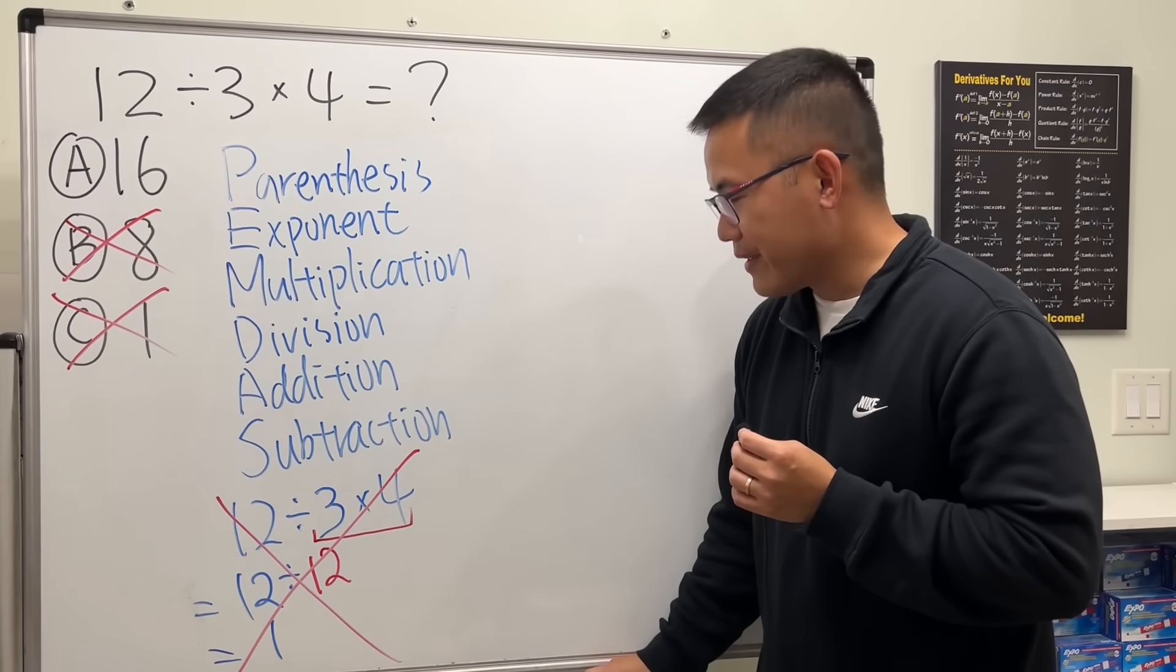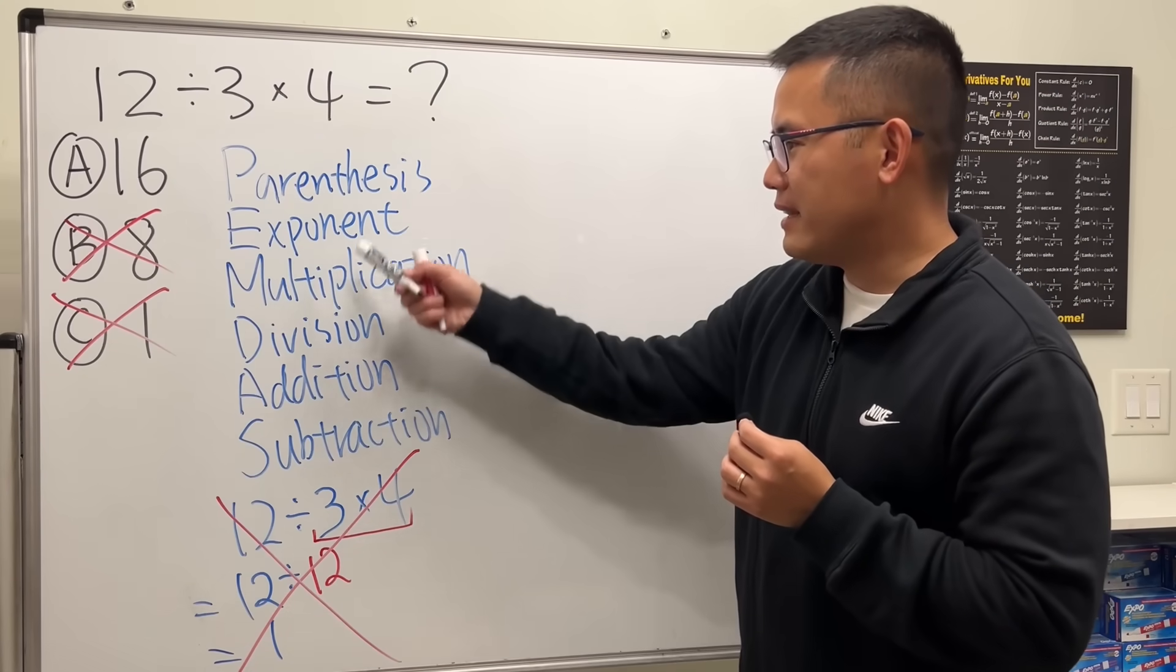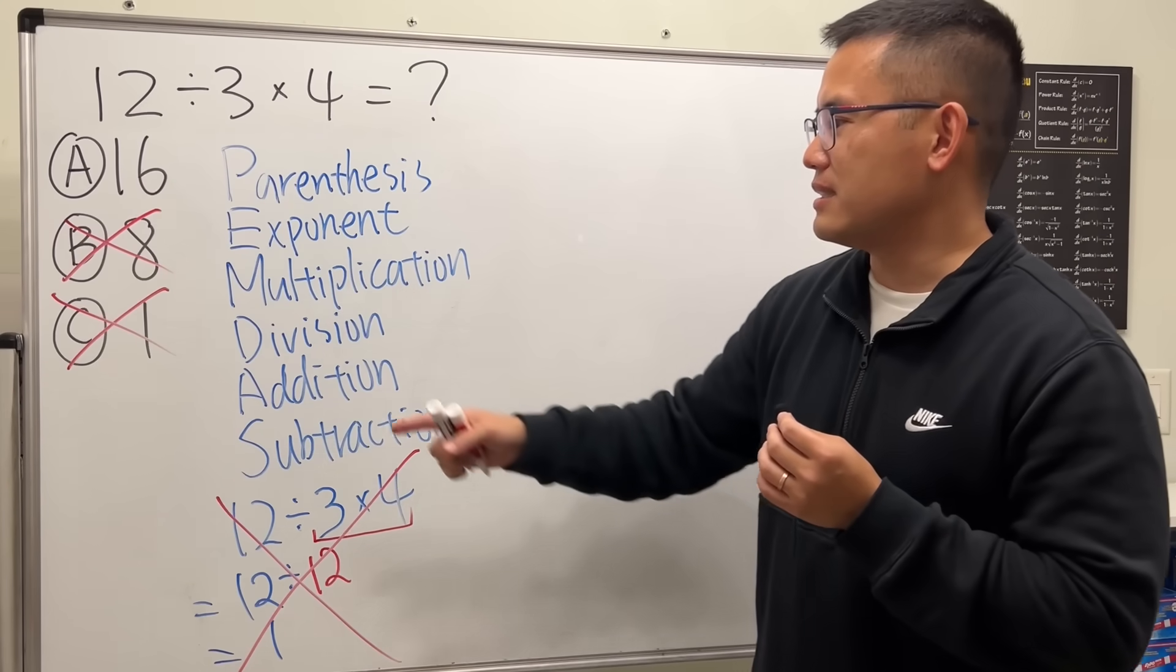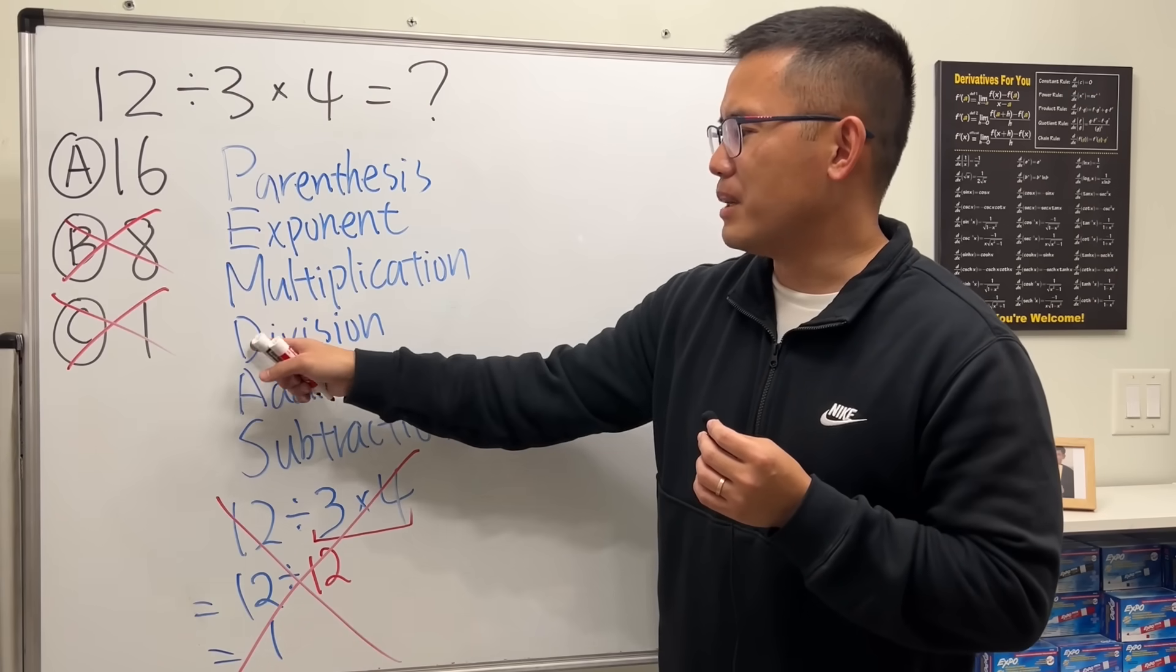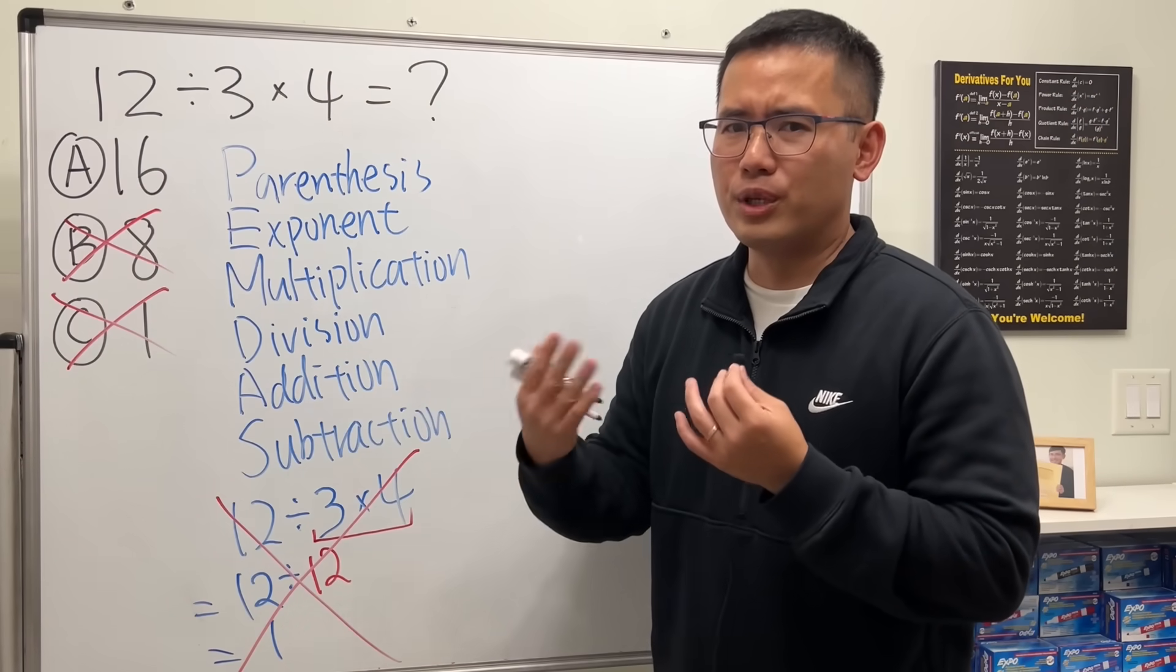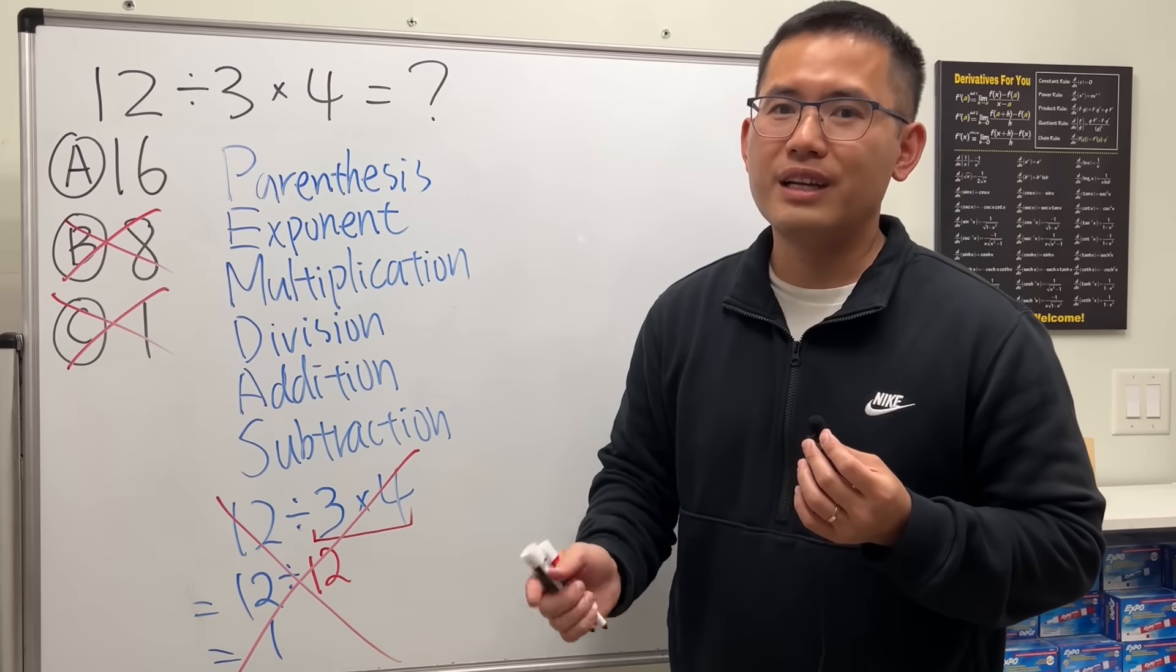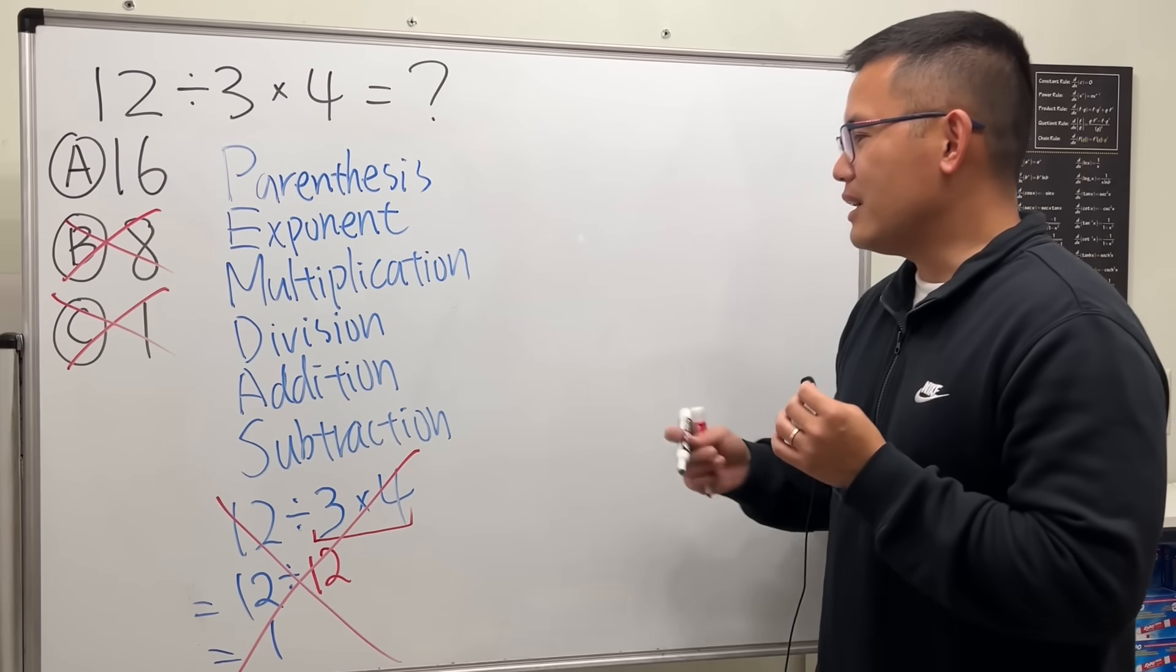But let me tell you, no, this is actually not correct. C is not the answer right. The answer is actually not equal to one, and I really don't like the PEMDAS because it does suggest us that M is like above D, the multiplication should go first before division. That's not true.